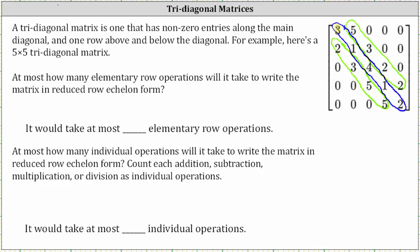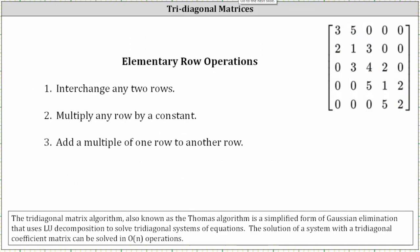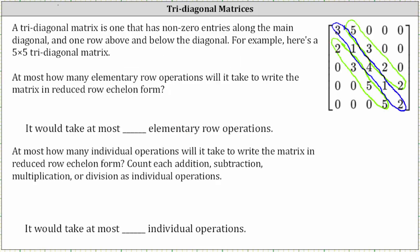Let's review elementary row operations. Elementary row operations are: number one, interchange any two rows; number two, multiply any row by a constant; number three, add a multiple of one row to another row. So to obtain zeros above and below the main diagonal, it would take up to one elementary row operation per entry.